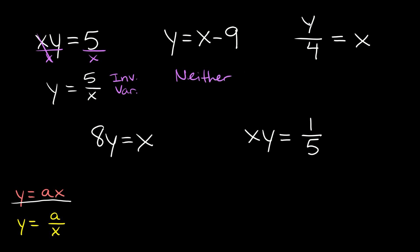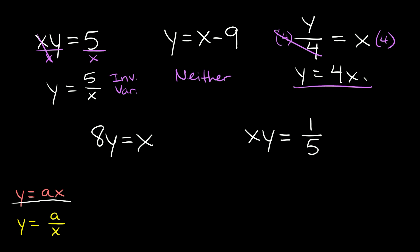Here we have y over 4 is equal to x. We need to solve for y first, so let's get rid of this 4 by multiplying both sides by 4. Those cancel out, so we get y is equal to x times 4, which is just 4x. We have some number times x, so this shows direct variation.